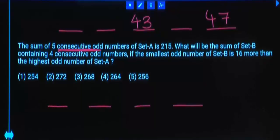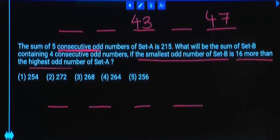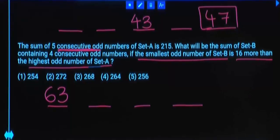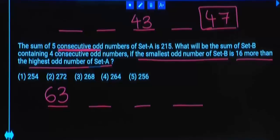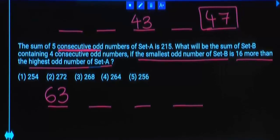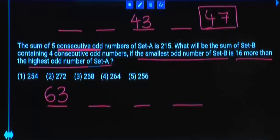In set B, we have 4 numbers. Smallest odd number in set B is 16 more than highest odd number in set A. Highest odd number in set A? 47 plus 16. 63 is the smallest number in set B. In set B, how many numbers are there? 4 consecutive odd numbers. Average of 4 consecutive odd numbers should be the middle number, an even number.